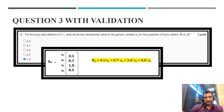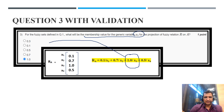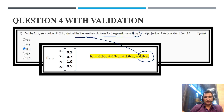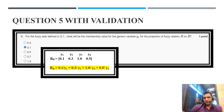For question 3, what is the membership value for generic variable x3 in the fuzzy relation R on A? For x3, the membership value is 1, so the correct answer is option E, that is 1.0. For question 4, what is the fuzzy membership value for generic variable x4? x4 has membership value 0.5, so the correct answer is option C, 0.5. So the first four questions depend upon fuzzy relation R on A.